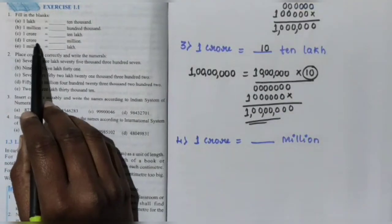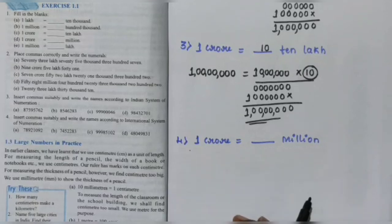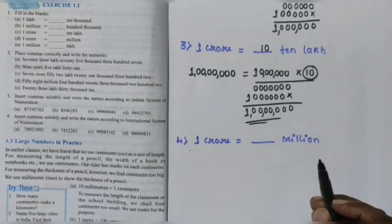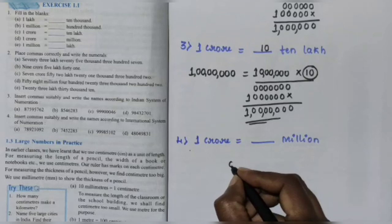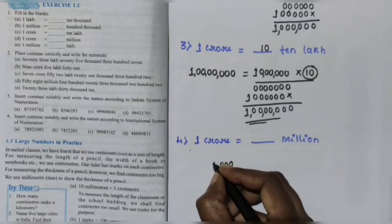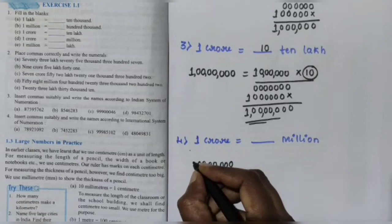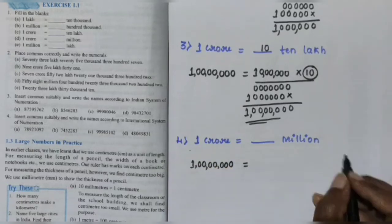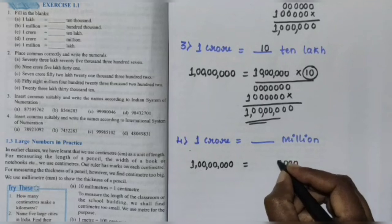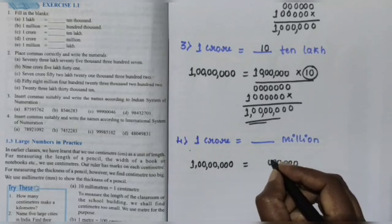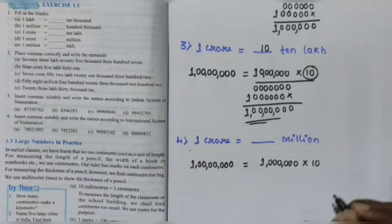Next, question number 4: 1 crore is equal to dash million. Crore is an Indian system unit and million is an international system unit. First you write 1 crore in numbers: unit, 10, 100, 1,000, 10,000, 1 lakh, 10 lakh, 1 crore. Then in international system: unit, 10, 100, 1,000, 10,000, 100,000, 1 million — then multiplied by 10.